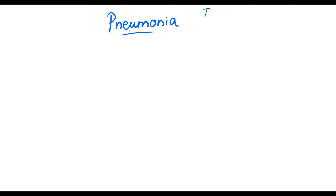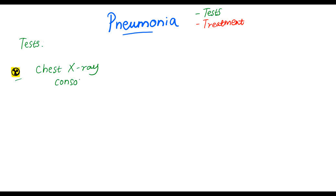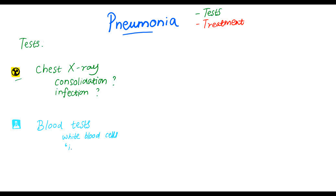Now let's see what tests we can do and what are the treatment options. Your doctor can order a chest X-ray, which is a radiological imaging that looks for any consolidations in the lung and helps to identify any infection within the lung parenchyma. Your doctor can also order blood tests looking at the white blood cells and to find the infection in the blood.